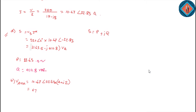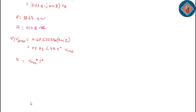47.72 at 49.4 degrees RMS. Now let's see the line complex power — BRMS at an angle 49.4 degrees, I conjugate at an angle minus 22.83 degrees.